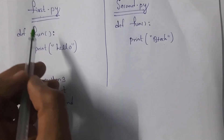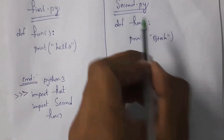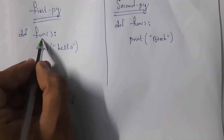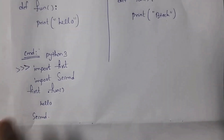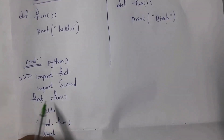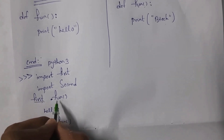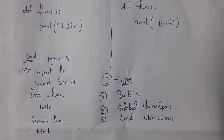Both first.py and second.py contain a function named fun. If I just write fun(), the program gets confused about which function to execute. To overcome this ambiguity, we need to include the module name. Writing first.fun() gives output 'hello', and writing second.fun() gives output 'btec'. That is why we must include the module name before any function name — to resolve ambiguity.